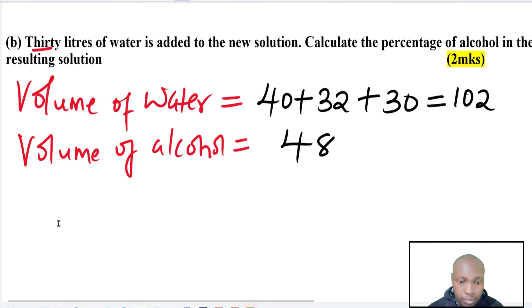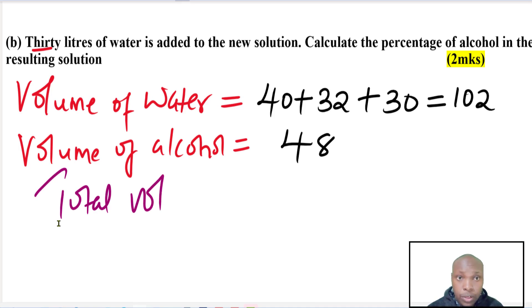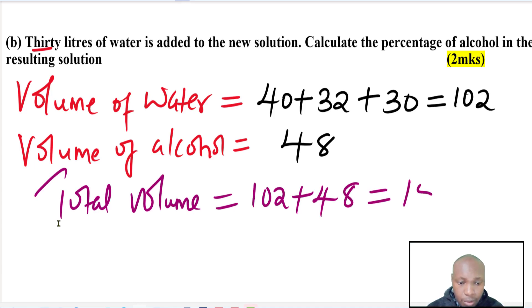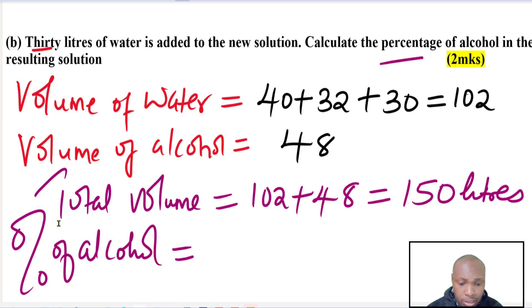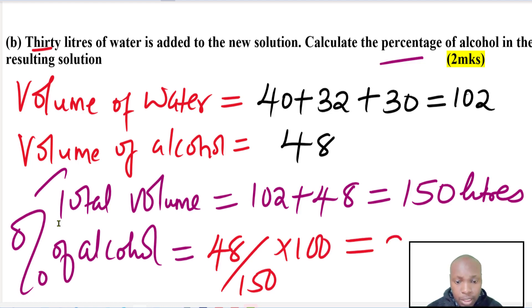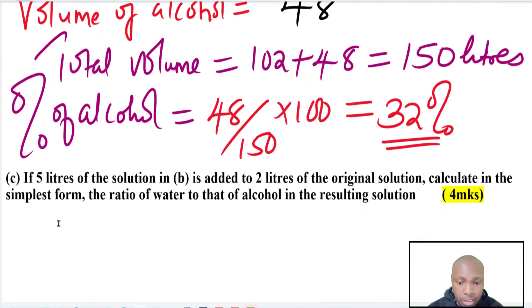The total volume of water and alcohol is 102 plus 48, which equals 150 liters. To get the percentage of alcohol: 48 divided by 150, multiplied by 100, gives 32 percent. That is the answer to Part B.